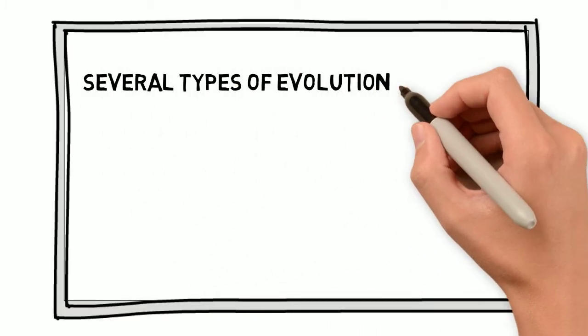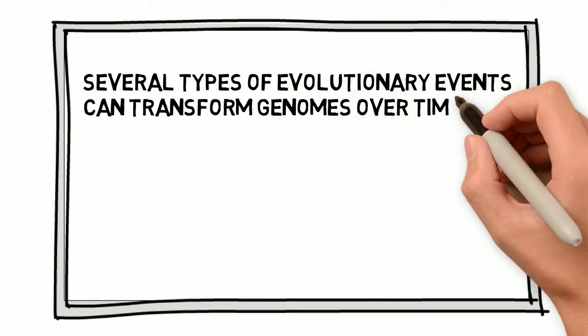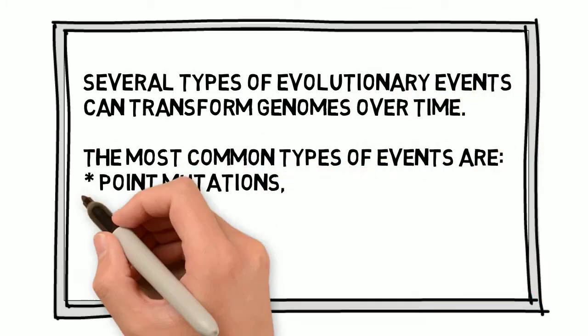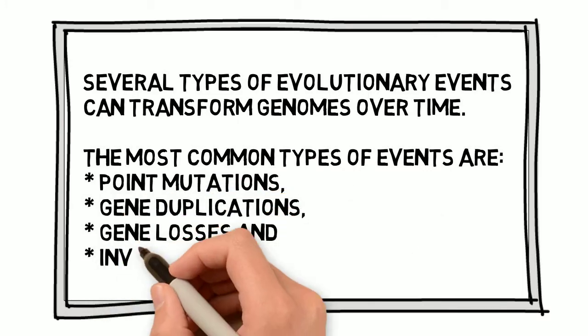Several types of evolutionary events can transform genomes over time. The most common types of events are point mutations, gene duplications, gene losses, and inversions.